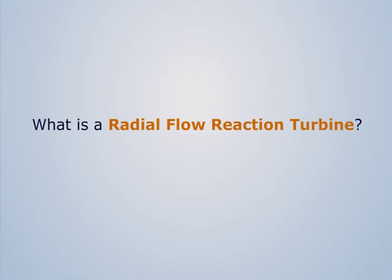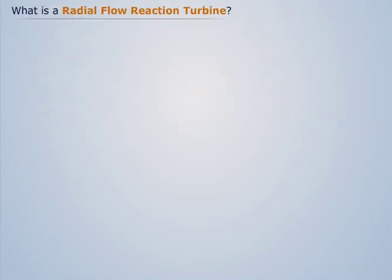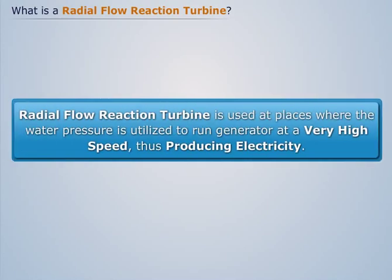What is a Radial Flow Reaction Turbine? A Radial Flow Reaction Turbine is used at places where the water pressure is utilized to run a generator at a very high speed, thus producing electricity.